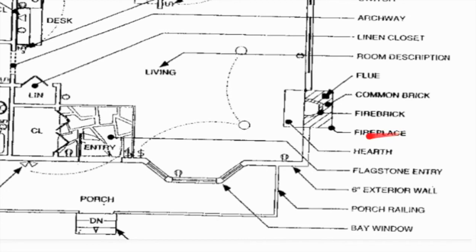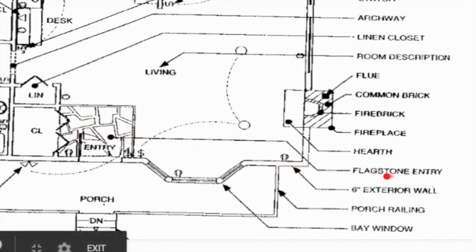This entire thing is the fireplace inside the house. The flue — this black box — is the opening in the fireplace or chimney that allows smoke to go up through. The diagonal lines represent common brick around the outside. Fire brick is similar except the lines are closer together — a higher rated brick that can handle heat from the fire — and then the hearth sitting on the front. This symbol here is a flagstone entry; there are different symbols for different types of materials, so that's an example of a flagstone floor in the entryway.